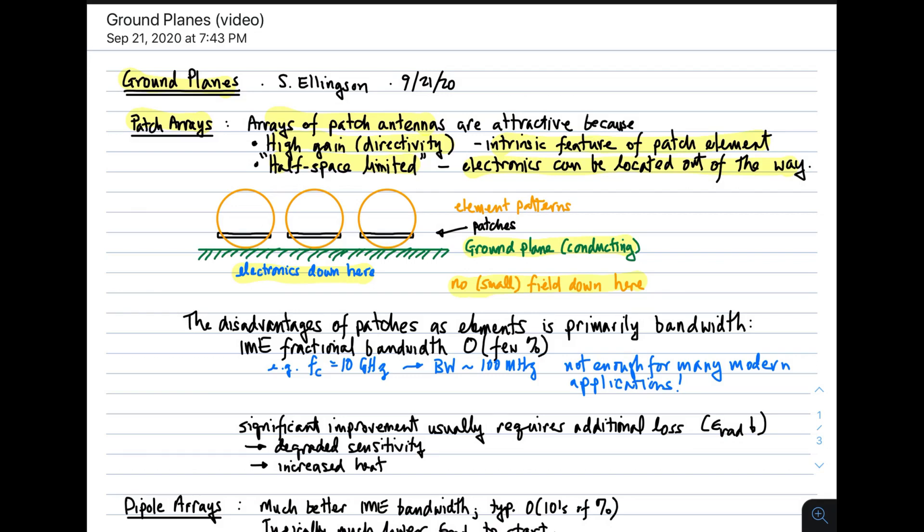So the idea of the patch array is that each element has a pattern which, simplified, looks like these circles. No field below the ground plane. So if you put electronics down there, they're not going to interfere with the behavior of the array. Now the disadvantage of patches as elements is primarily bandwidth. And that's because the impedance match efficiency is limited to a small fractional bandwidth. That fractional bandwidth is typically on the order of a few percent.